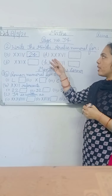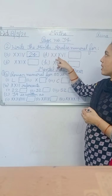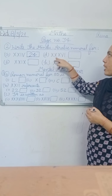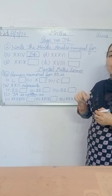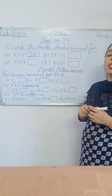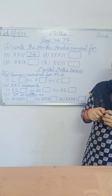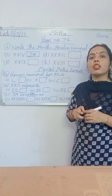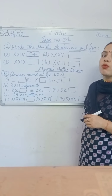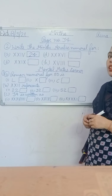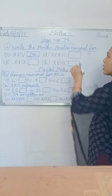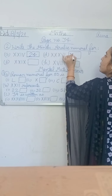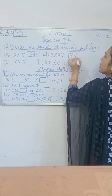Now part D is XXXVI. XXXVI means XXX is 30 and VI means 6. That means 30 plus 6 is 36. Now write 36 here.